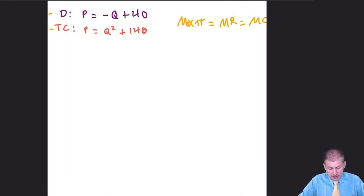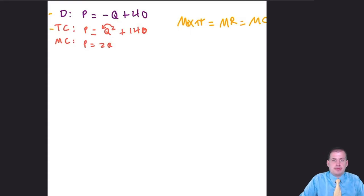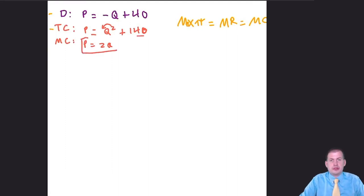We can figure out marginal cost fairly easily because we already have total cost — marginal cost is just the derivative of total cost. So we do a little bit of calculus: we bring the exponent down, so it's 2Q to the first power, and the 140 disappears. Our marginal cost is P equals 2Q. That's pretty easy.